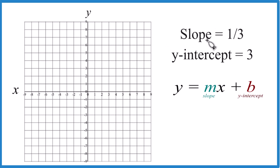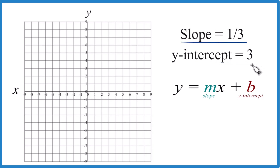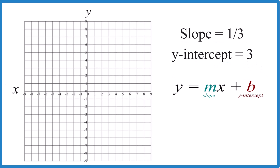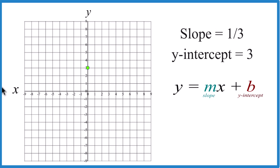All right, let's graph the line when we have a slope of one-third and a y-intercept of three. We go to the y-axis and we're looking for three — that's where we're going to intercept the y-axis. That's our first point.